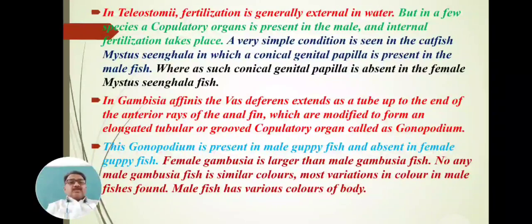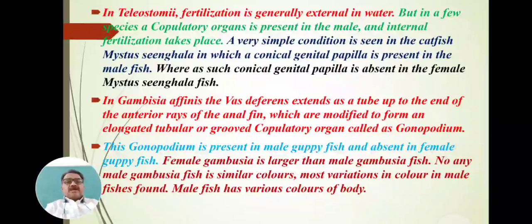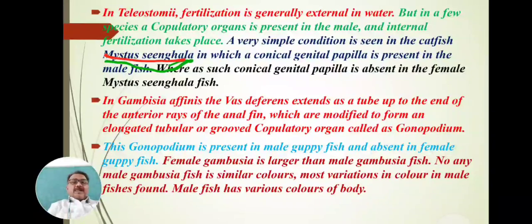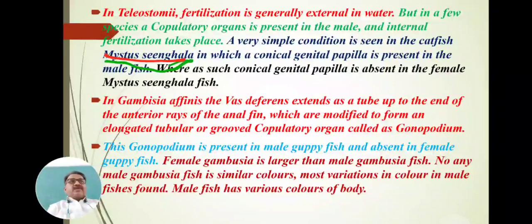A very simple condition is seen in catfish, especially in the Mystus singhala species. In this fish, a conical genital papilla is present in the male, whereas such conical papilla is absent in female Mystus singhala. Depending on this genital papilla, we can identify whether the fish is male or female Mystus singhala.